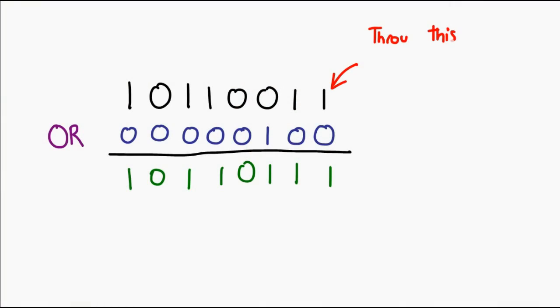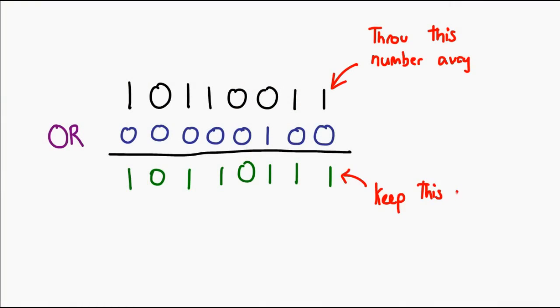So what do I do with this new number? Obviously, I want this change to apply. What I have to do is this answer actually becomes the new number. So now, instead of holding that previous number, I'm going to use this new one instead, and of course that will reflect the bit that has been changed.